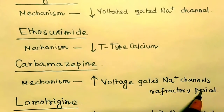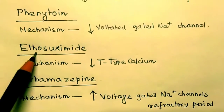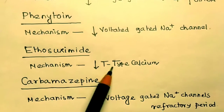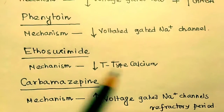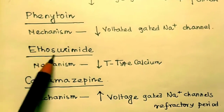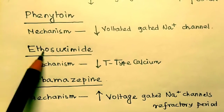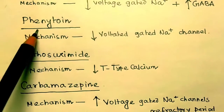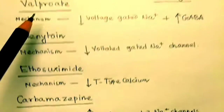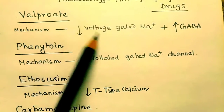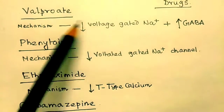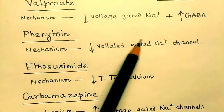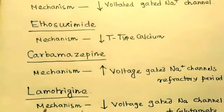To recap: for ethosuximide, remember T-type calcium decrease. For phenytoin and valproate, the mechanism is voltage-gated sodium channel decrease. All these share that same mechanism.